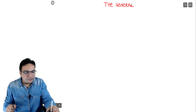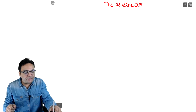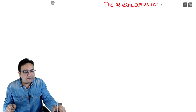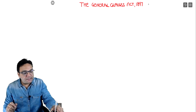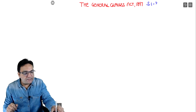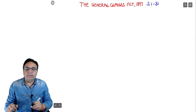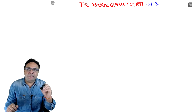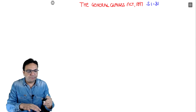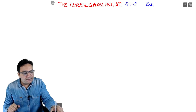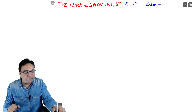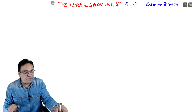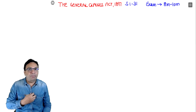General means 'aam toor pe' (commonly), clauses means terms. The General Clauses Act of 1897. This act comprises 31 sections, but section number 31 is repealed - that means it's no more there. Regarding exam weightage, CMA gives it weight - minimum 8 to maximum 10 marks. So it becomes quite important.